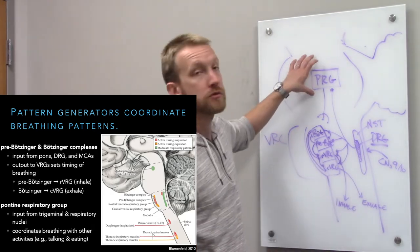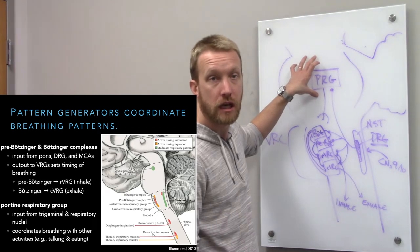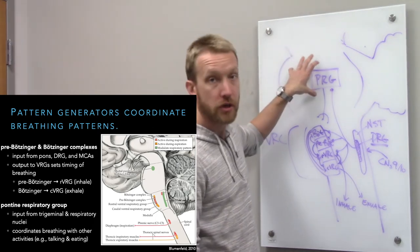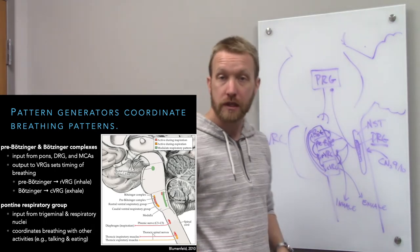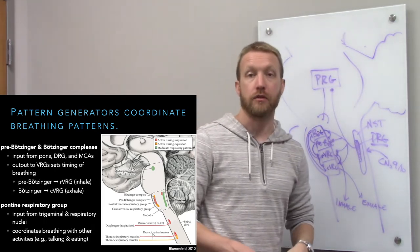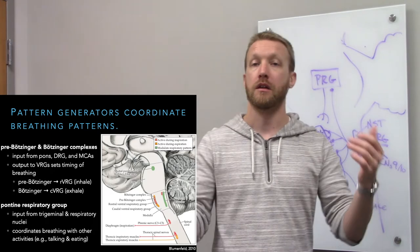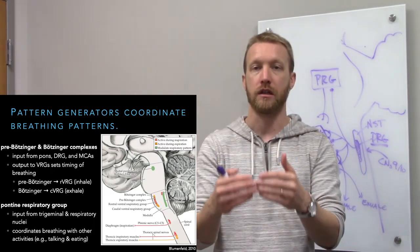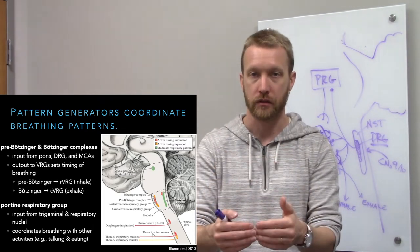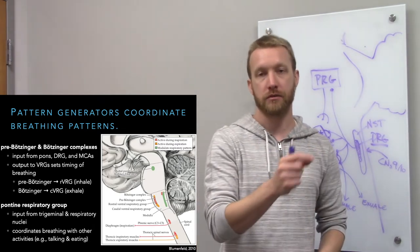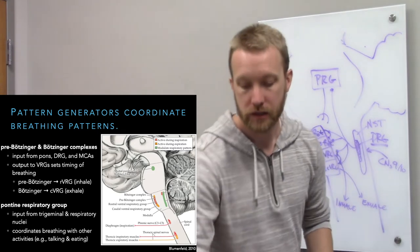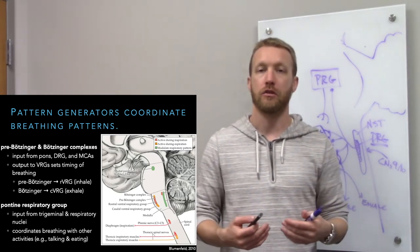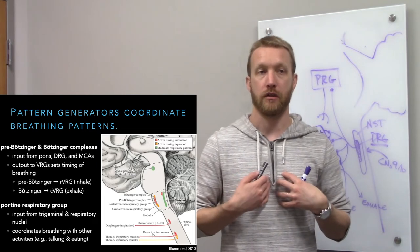The pontine respiratory group determines whether it's appropriate to inhale. If we're talking and want to finish a thought even though we need a breath, the pontine respiratory group lets us do that. So talking, eating, or drinking all influence how we move air around.